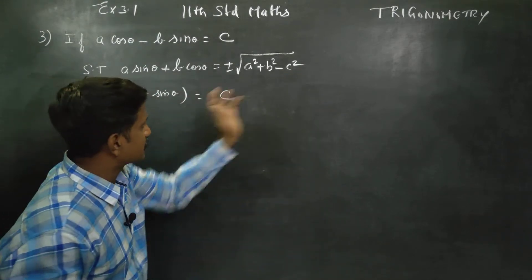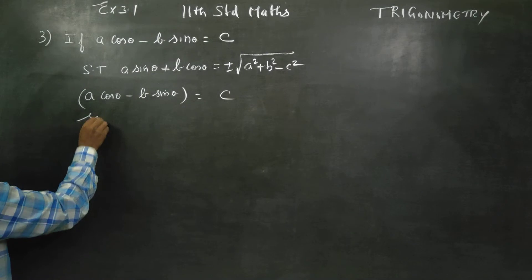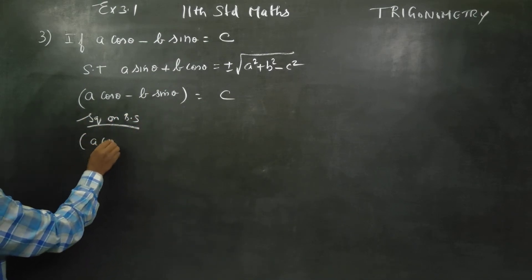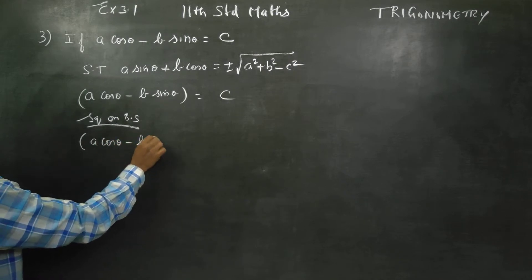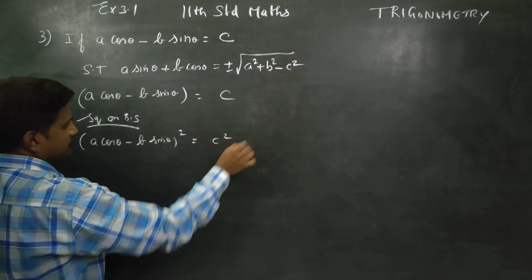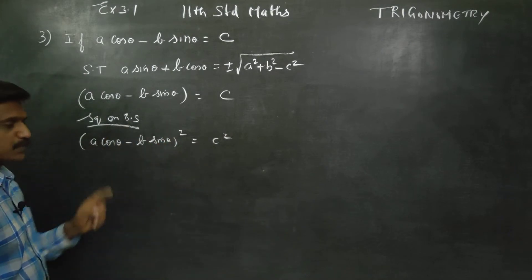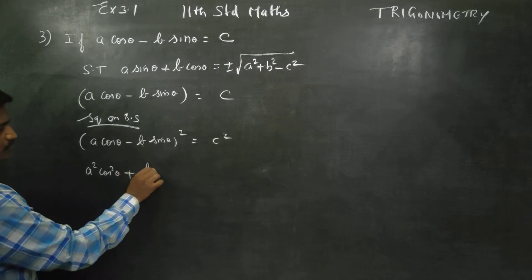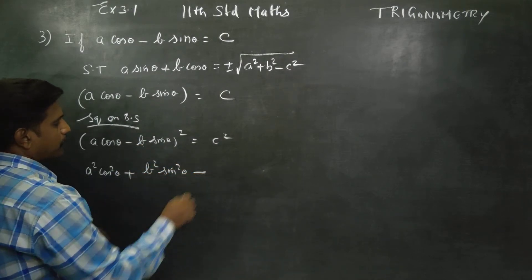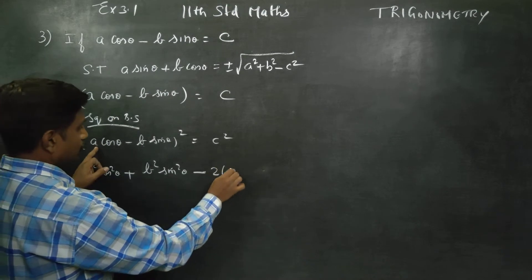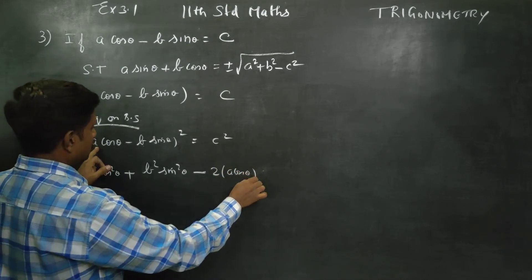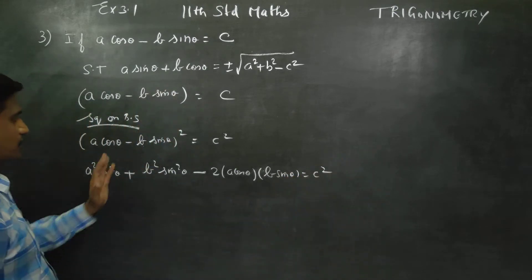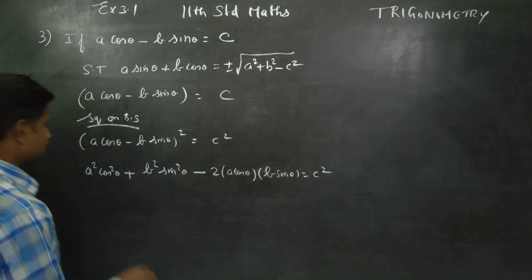I will start by squaring on both sides. So, A cos theta minus B sin theta, whole square, is equal to C square. Using the A minus B whole square formula — A square plus B square minus 2AB — we get: A square cos square theta plus B square sin square theta minus 2 into A cos theta into B sin theta is equal to C square.